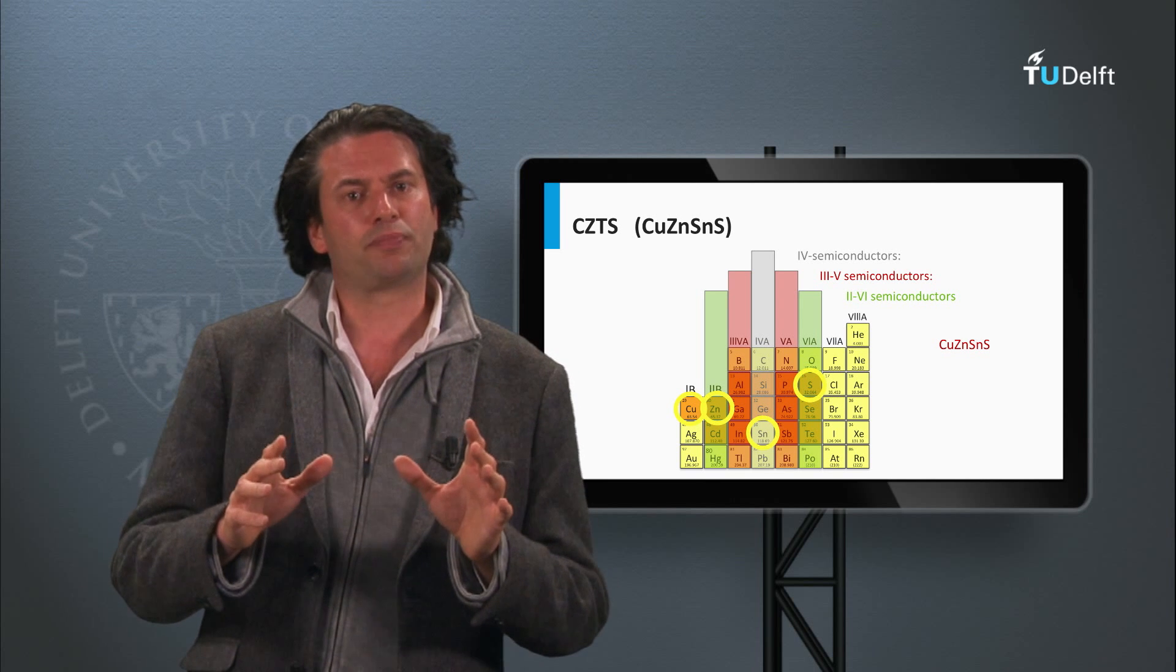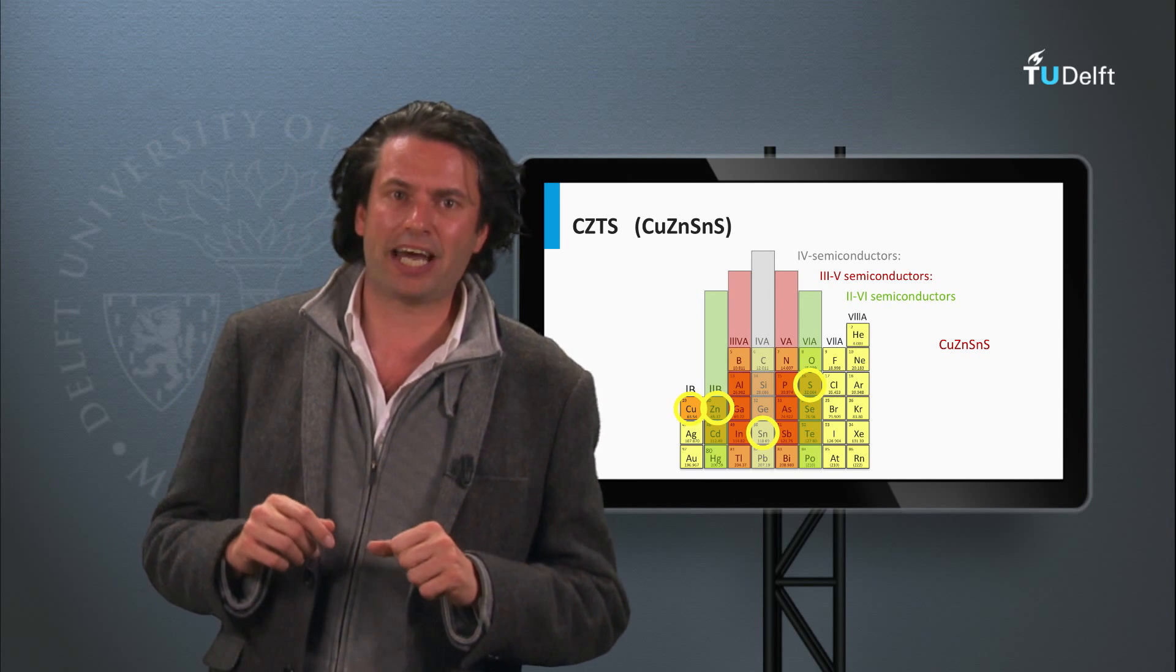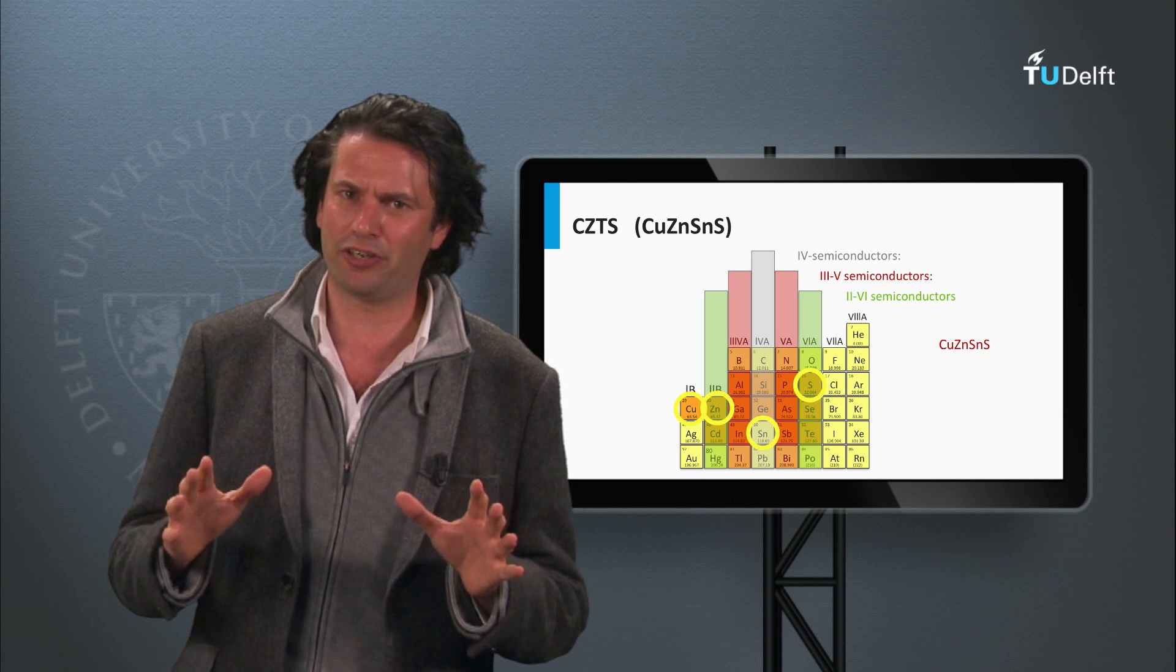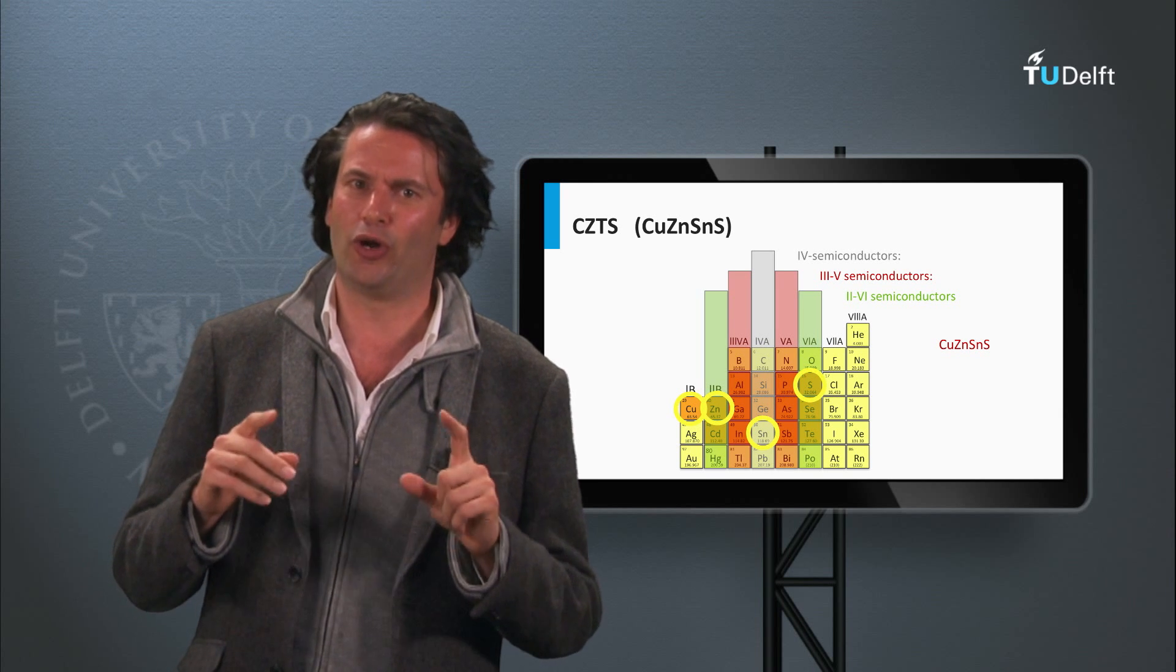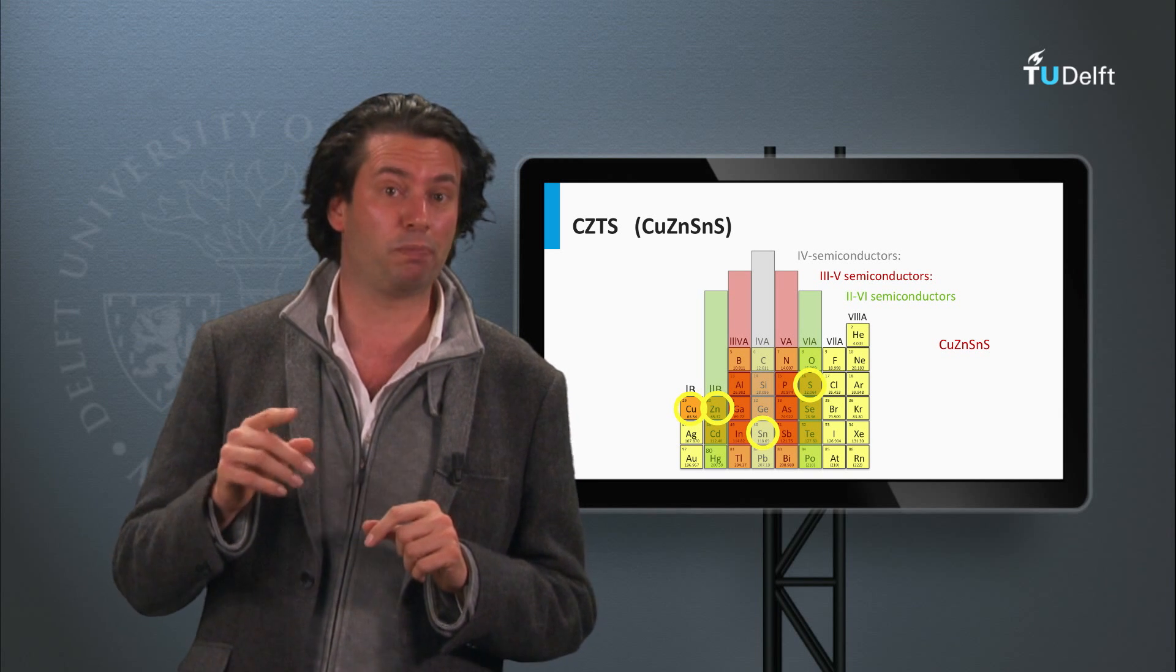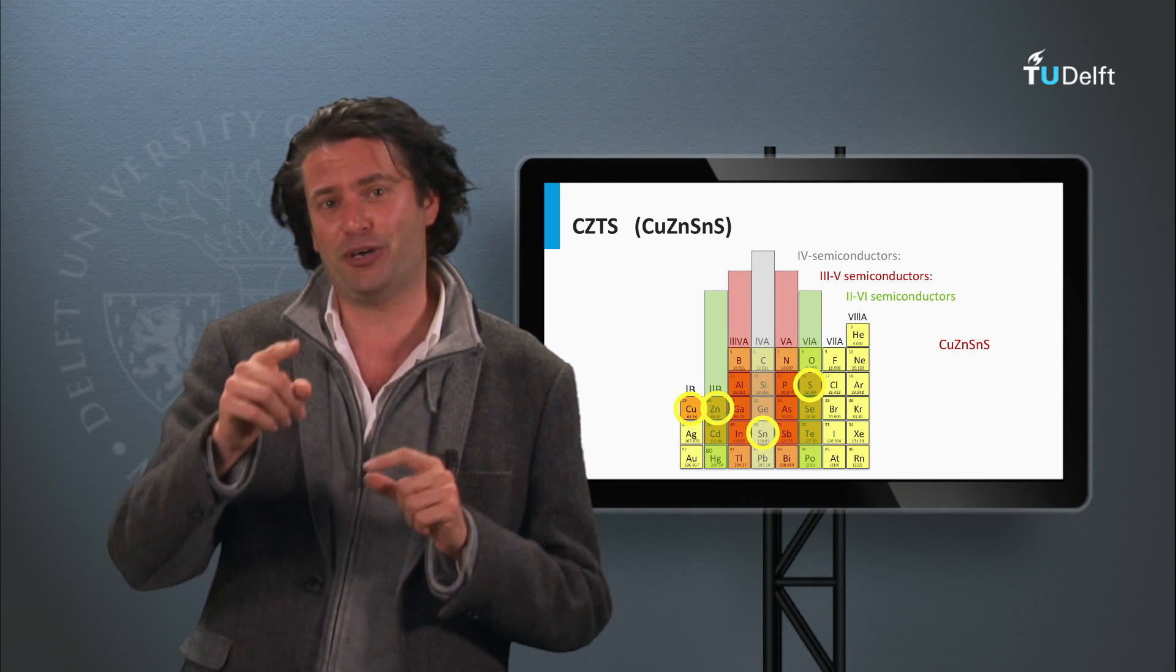In the next block, we will discuss the thin-film cadmium telluride PV technology. This is a PV technology which has currently the lowest demonstrated cost price per watt peak. See you in the next block.